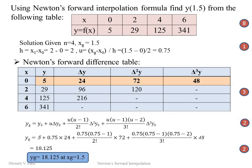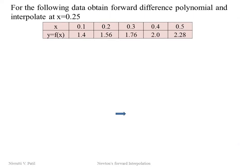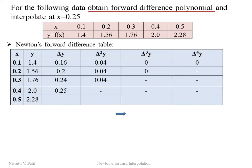Now we solve a second numerical where we have to obtain the forward difference polynomial. When the problem asks for the forward difference polynomial, we must write the yg formula in terms of xg without directly substituting the given value xg = 0.25. We prepare the forward difference table similarly, then express u in terms of xg using x0 and h, giving u = 10xg − 1 after eliminating the denominator.